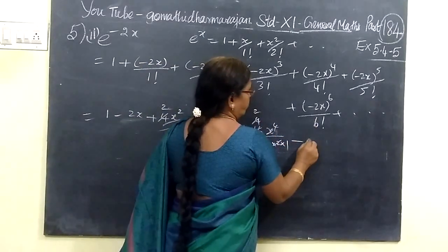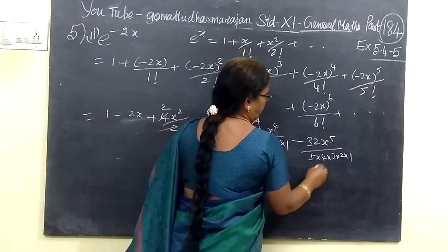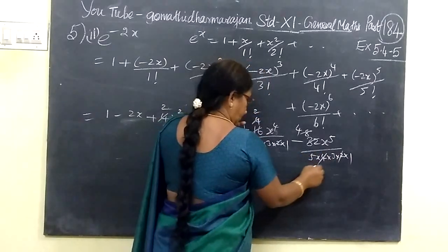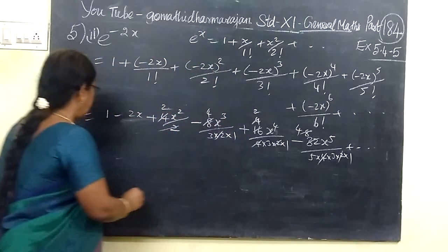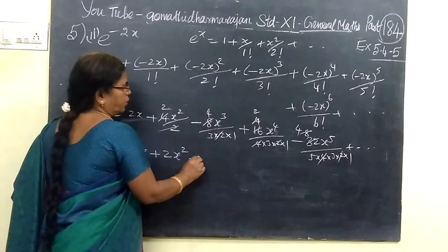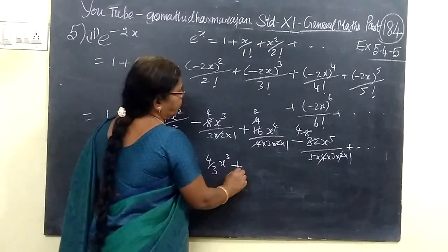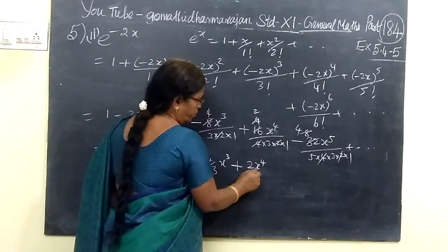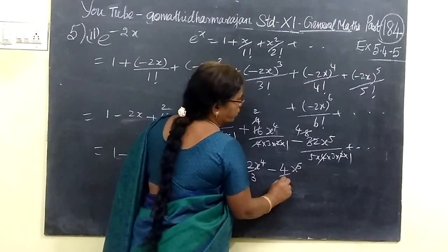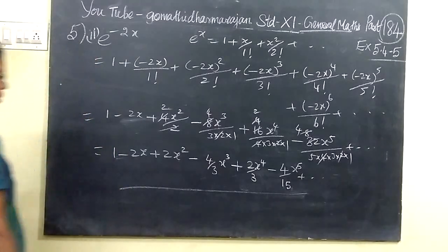Then minus. 2 to the fifth is 32, x to the fifth. Then 5 into 4 into 3 into 2 into 1. So, this is equal to 1 minus 2x plus 2x squared, then minus 4 by 3 x cubed. Then plus 2x to the fourth by 3. Then minus 4x to the fifth by 5 into 15. The sixth term is in this. So, the first six terms.